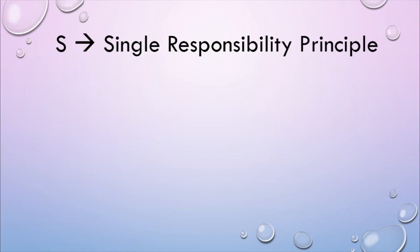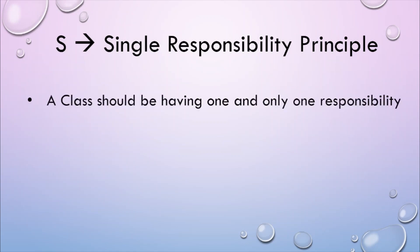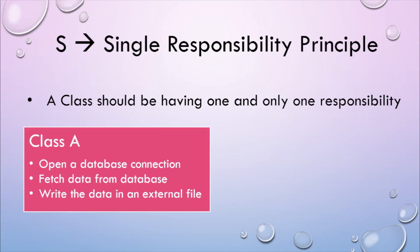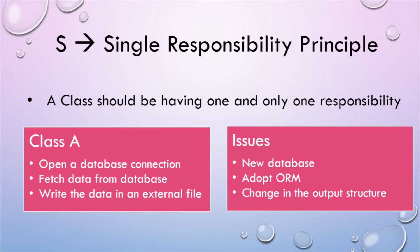Let's take a look at Single Responsibility first. The name itself suggests that a class should have one and only one responsibility. Let's take class A, which does the following operations: open a database connection, fetch the data from database, and write the data to an external file. You may say, what is the problem with this class? It has three methods doing different things which satisfies the current requirement — in a way it is correct because it is doing what is expected, but it is not extensible.